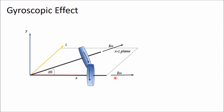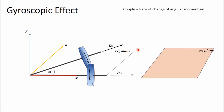Although the magnitude of angular momentum remains Iω, the direction is changing, so the angular momentum is changing. Whenever angular momentum changes there will be a couple equal to the rate of change of angular momentum. To find the change in angular momentum, draw both initial and final vectors from the same point — OA is the initial momentum and OB is the final momentum. The difference OB minus OA is represented by vector AB.